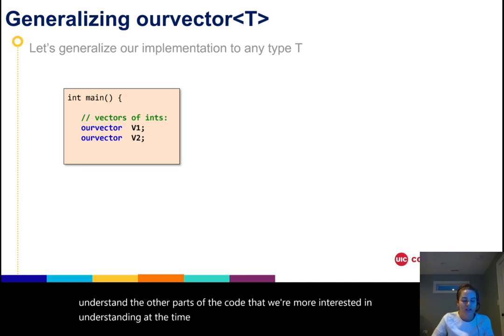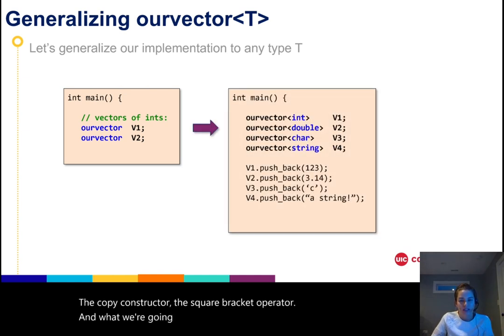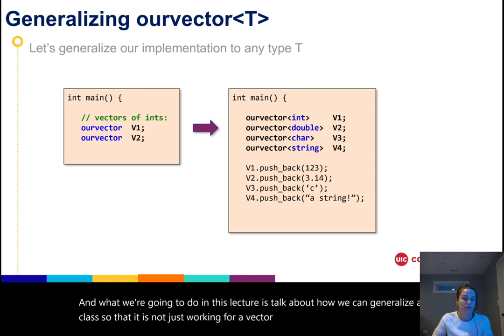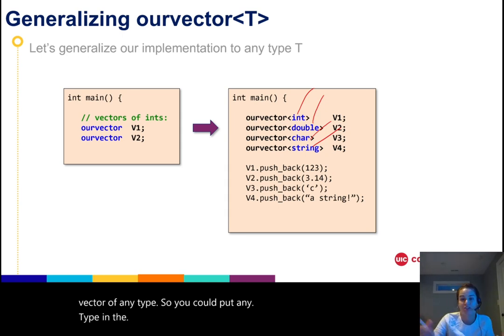Understanding the different member functions, the constructor, the copy constructor, the square bracket operator, and what we're going to do in this lecture is talk about how we can generalize a class so that it is not just working for a vector of integers, but working for an ourvector of any type. So you could put any type in the angle brackets and you can make vectors that way.